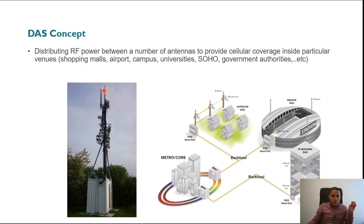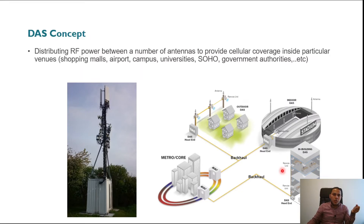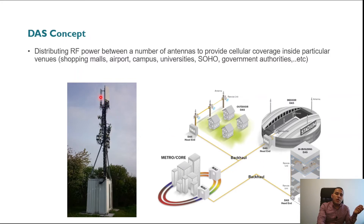Another reason is that you cannot rely on the output power of the macro cell site to penetrate the building. Many buildings today are constructed with concrete walls on the outer wall, and concrete walls have a very high attenuation level — around 10, 12, or 15 dB of losses to the RF signal. So you cannot penetrate the building using the outdoor macro site; it's a waste of power and RF resources.